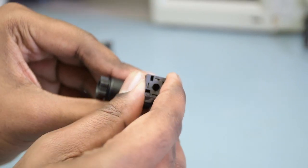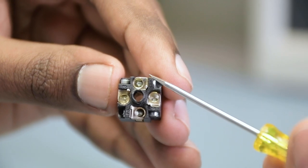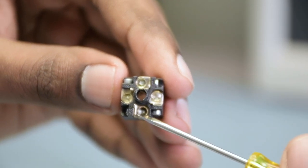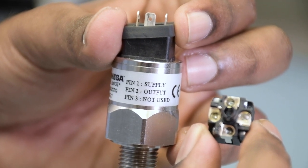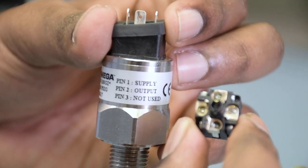Once you get it out, you'll see a terminal block with four screws in there. If you look at the body of the transducer, you should have the pinout configurations, or you can also look at the calibrations that you get.